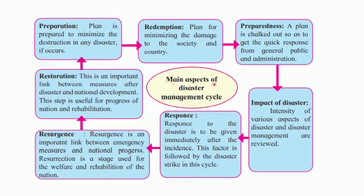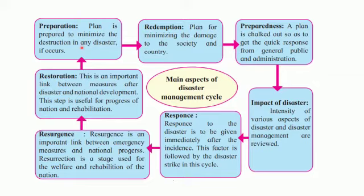Let us now study the main aspects of the disaster management cycle. The first step is preparation. A plan is prepared to minimize destruction in any disaster if it occurs. The main aim of disaster management is preparation so that the loss of life and property is kept to a minimum.